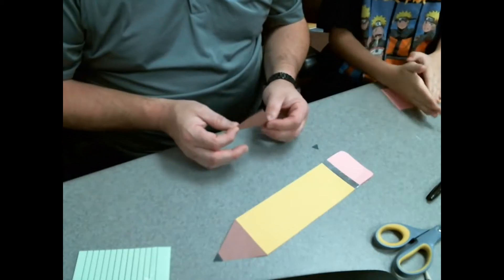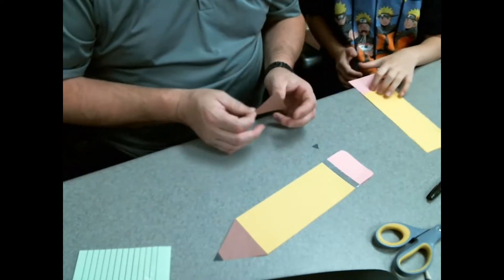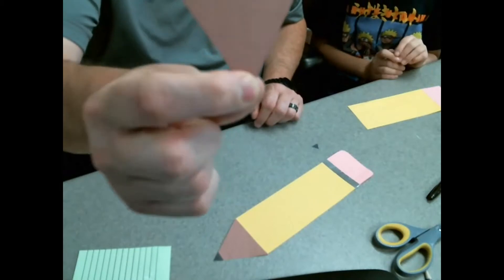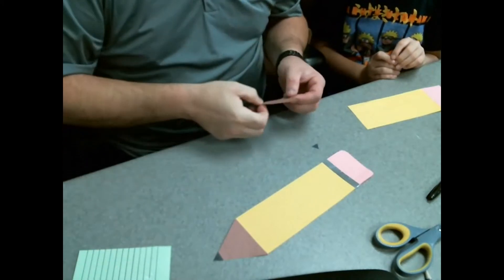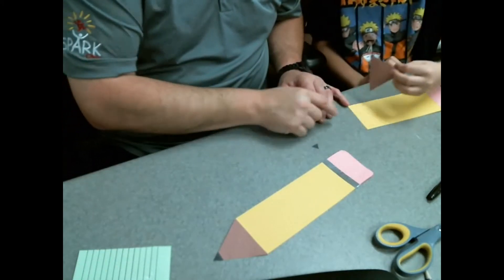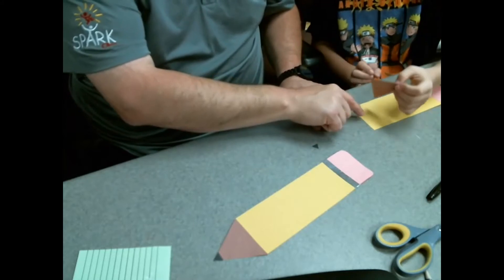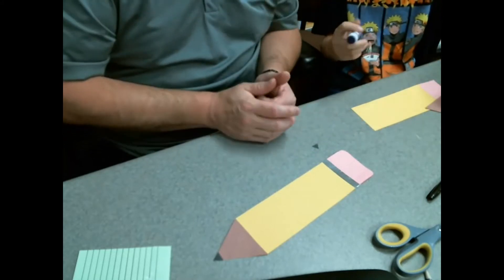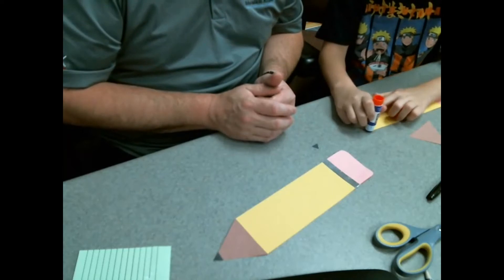Now that that's all pushed down, we have our equilateral triangle. So I have the numbers wrote on this side, so we're gonna make sure that side's down. You're gonna glue it on to this edge of the pencil, and then push.